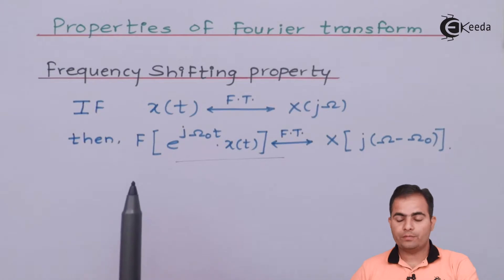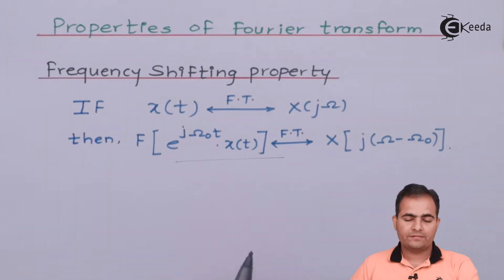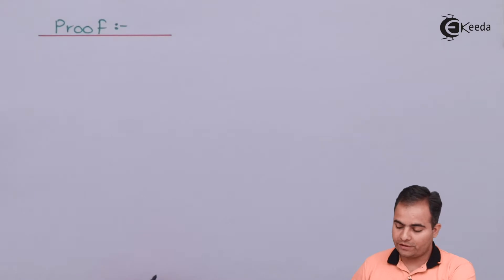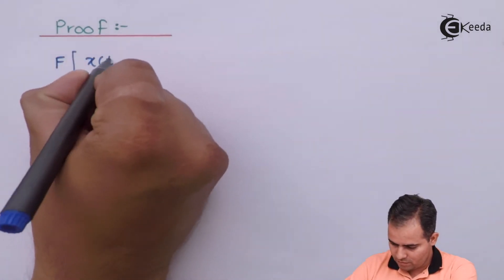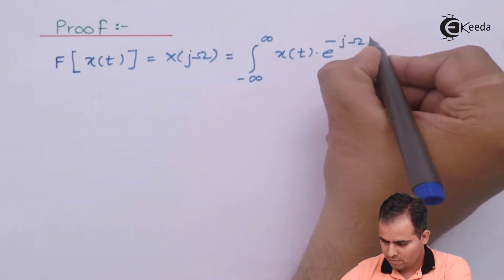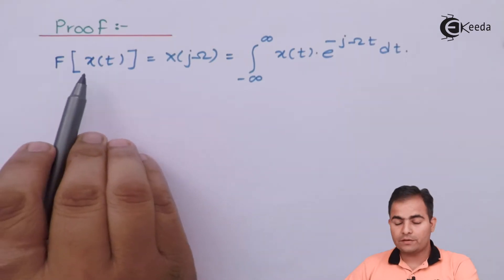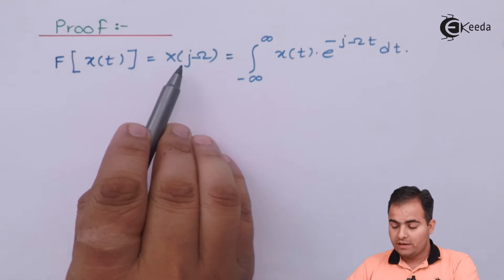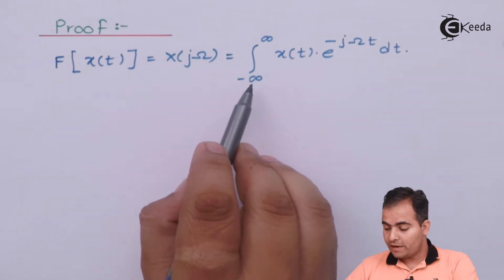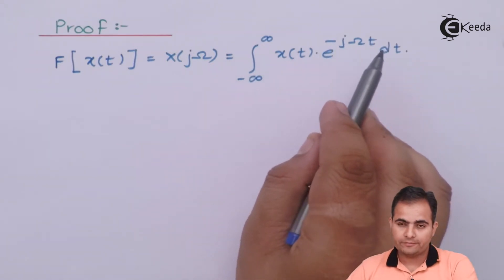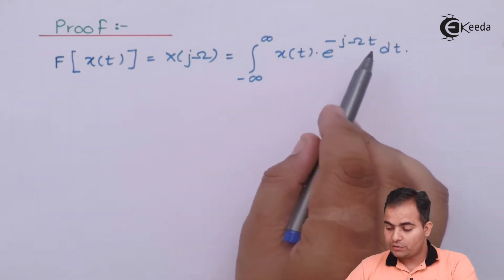Let's see the proof. We will derive our property by using the definition of Fourier transform. So first of all we'll write the definition: the Fourier transform of x(t) is represented by X(jω), and the definition is the integration from minus infinity to infinity of x(t) · e^(−jωt) · dt.